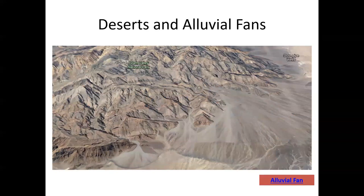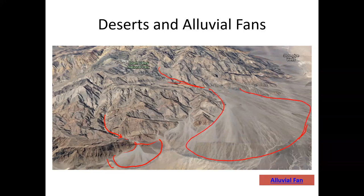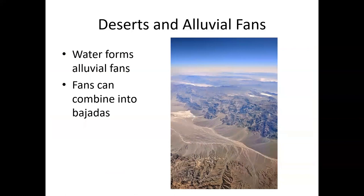A depositional feature we've mentioned are alluvial fans, which form in deserts where steep valleys open out into a flat central valley, and all of the sediment dumps out quickly into a fan shape. We see one small alluvial fan there, and coming from a larger valley, a much larger alluvial fan extending further out. These fans can combine — we call a surface made of merged alluvial fans coming off one ridge of mountains a bajada.